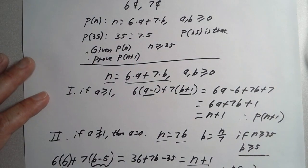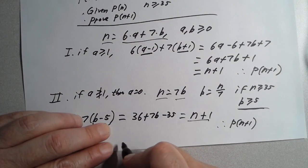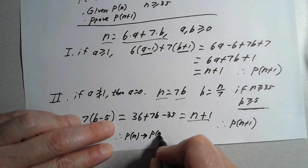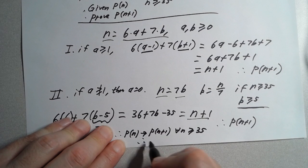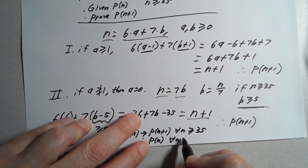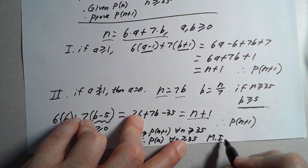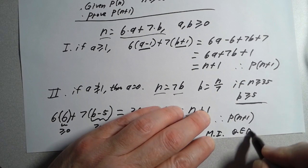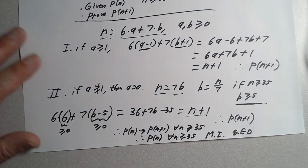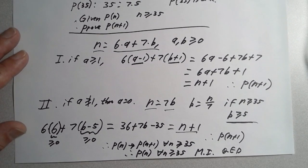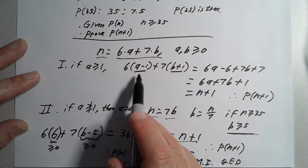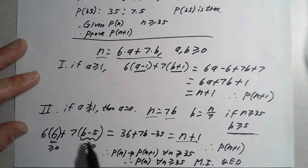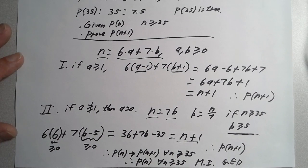These are the only two cases, so in either case given P(n) we've proven P(n+1). Therefore P(n) implies P(n+1) for all n ≥ 35, and therefore P(n) is true for all n ≥ 35 by mathematical induction. The intuition is the same: if you have a six-cent stamp, swap it for a seven-cent stamp; if you have no sixes, take away five sevens and add six sixes, which bumps you up by one cent. Hope that helps!